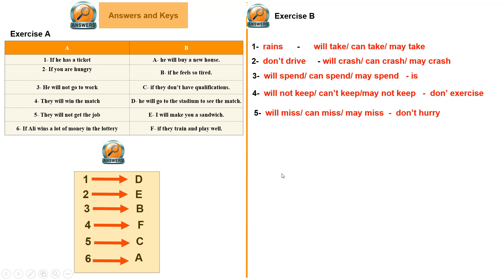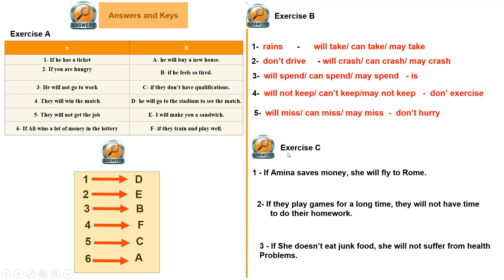Number five matches letter C: 'They will not get the job if they don't have qualifications.' Number six matches letter A: 'If Eddie wins a lot of money in the lottery, he will buy a new house.' For section B, I provide the correct form of the verbs in brackets — either simple present or simple future. For section C: number one — 'If Emina saves money, she will fly to Rome.' Number two — 'If they play games for a long time, they will not have time to do their homework.' And finally — 'If she doesn't eat junk food, she will not suffer from health problems.'